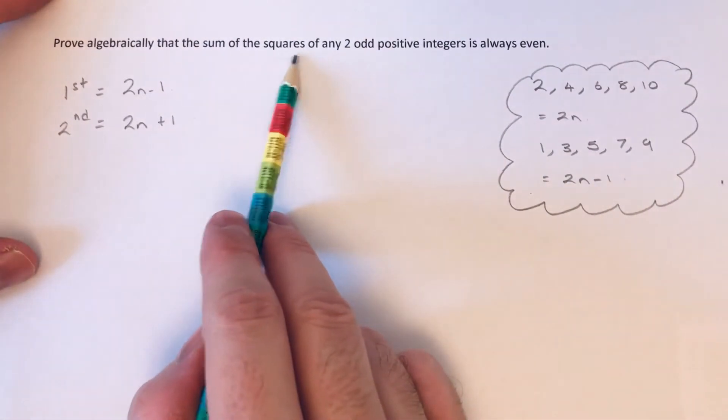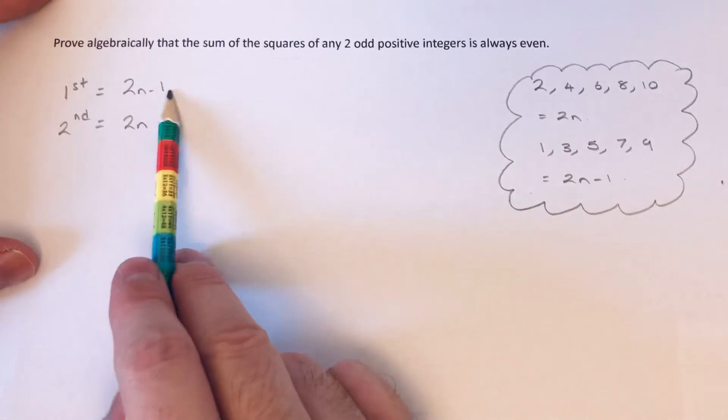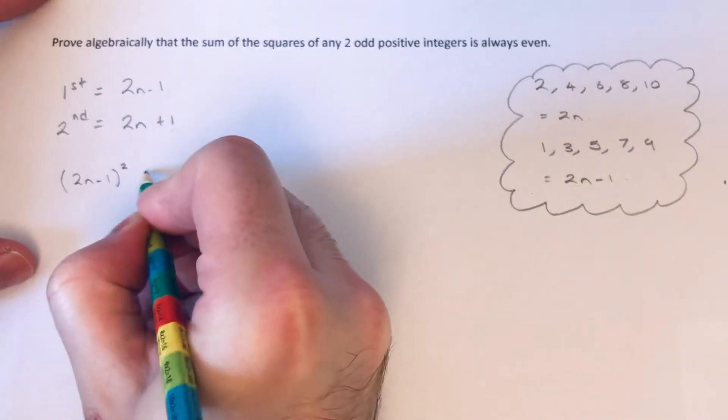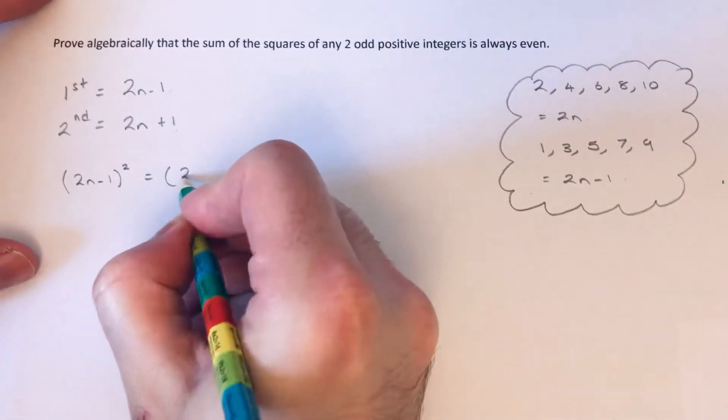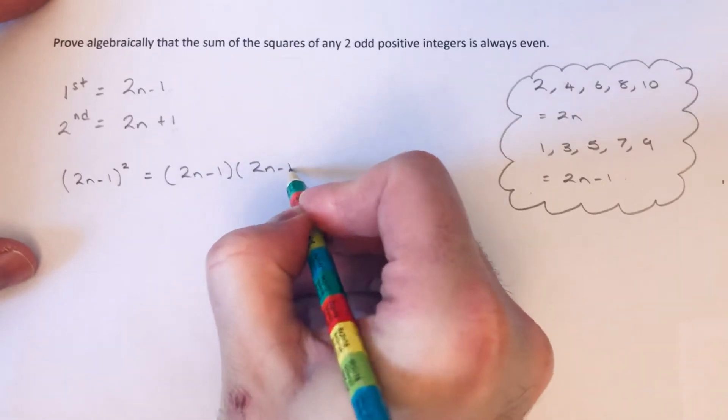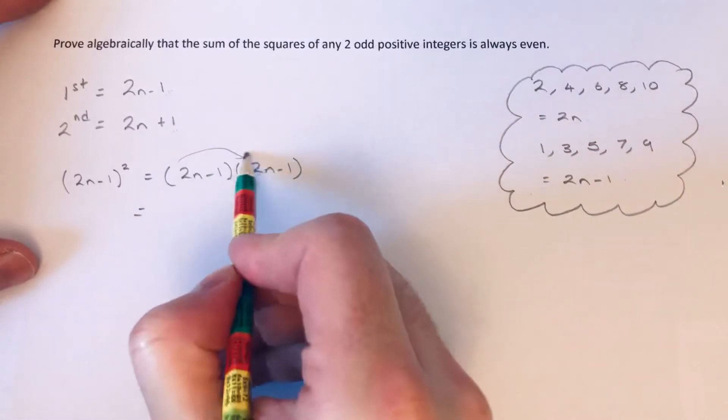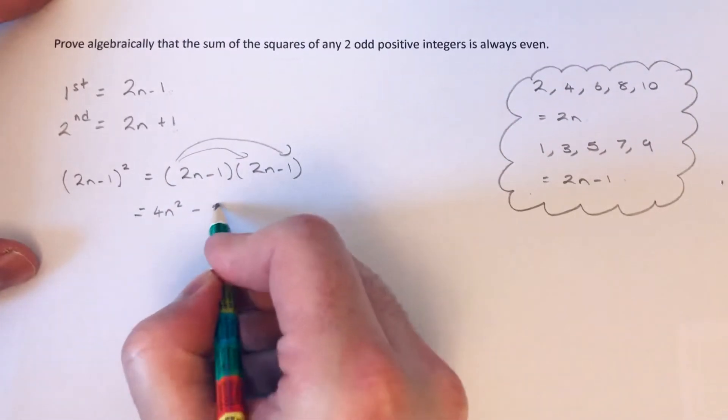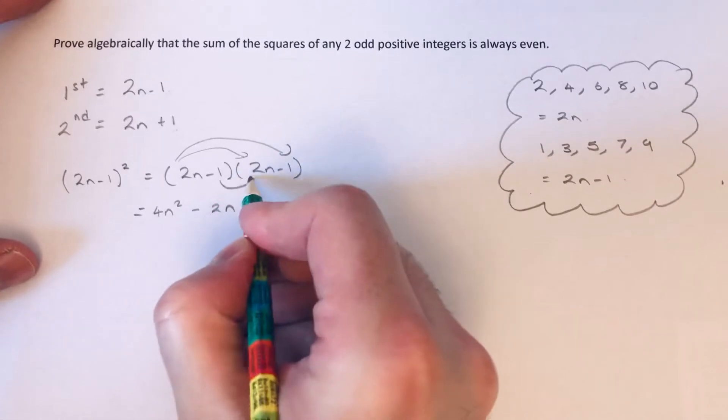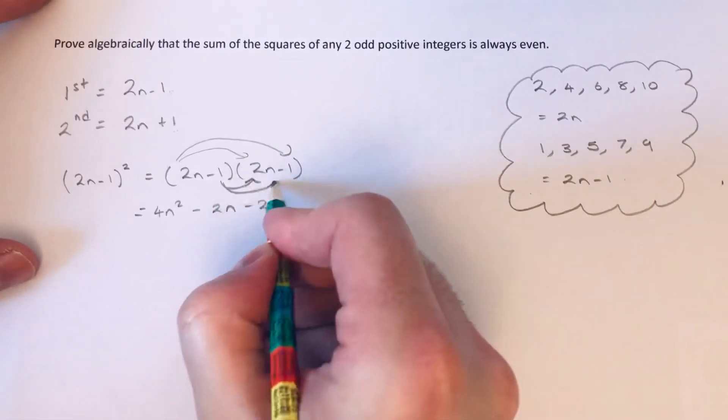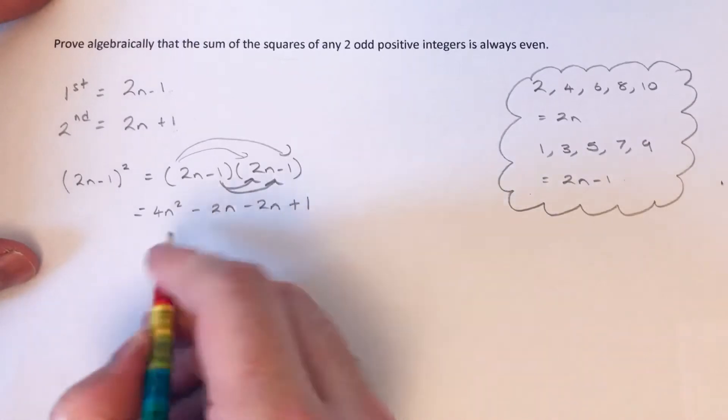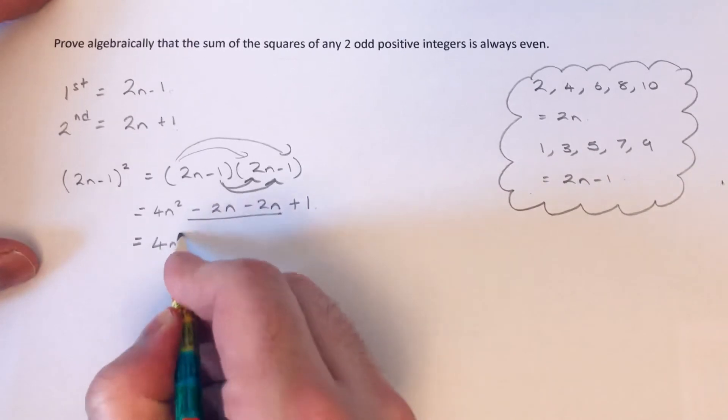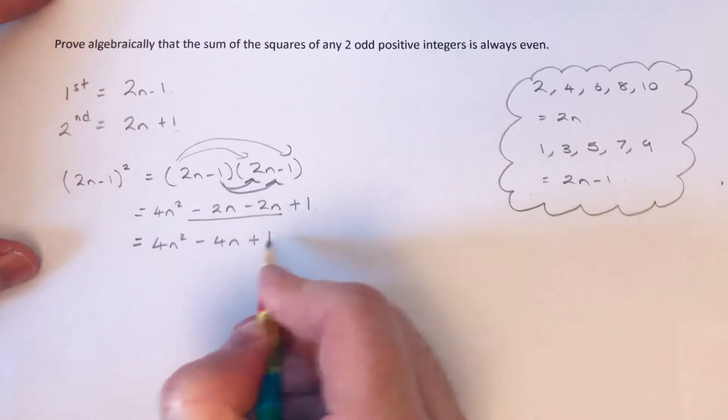What we've got to do then is square these odd numbers. So if I square 2n minus 1, we've got to do double brackets here. So 2n times 2n is 4n squared, 2n times minus 1 is minus 2n, minus 1 times 2n is minus 2n, and minus 1 times minus 1 is plus 1. So if I simplify this, I get 4n squared minus 4n plus 1.